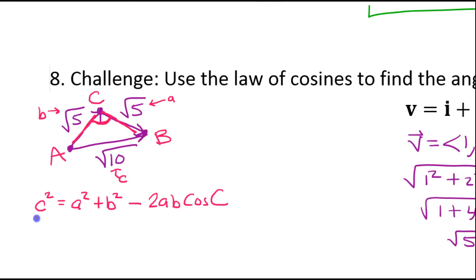Now I think you'll see that we have all of this information except for angle c. So let's start substituting things in. c² is (√10)². So I have (√10)². That's my c². It's equal to a². A is right here, so that's (√5)². Plus b². Another (√5)². Minus 2ab. So minus 2√5 times √5, and then cosine of angle c.